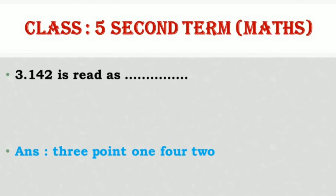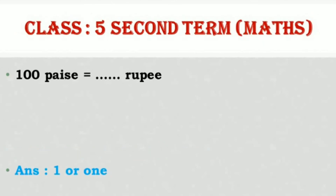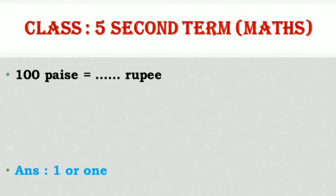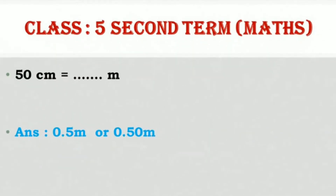3.142 is read as three point one four two. 100 paise is equal to 1 rupee. 50 centimeters is equal to 0.5 meter.